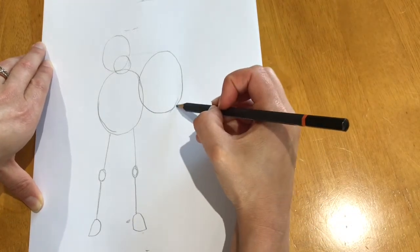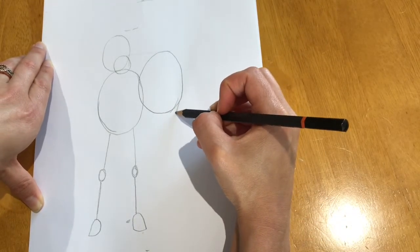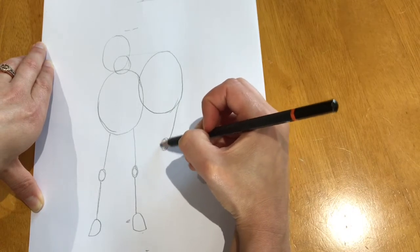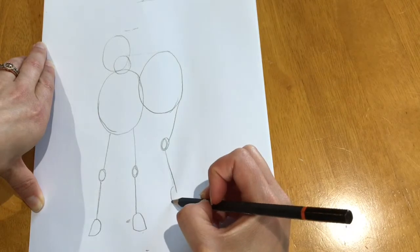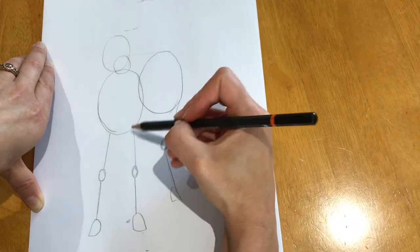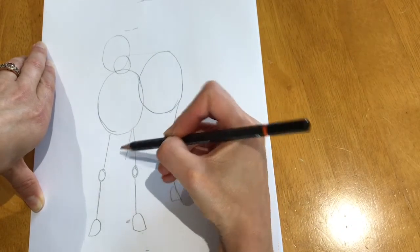And then for the hind legs this one's coming slightly round here. And a circle for the knee. This is coming out a little bit and then the hoof. And then the other hind leg.